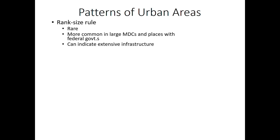Similarly to what we learned about Borchert's model, when you build infrastructure somewhere, that allows people to travel, which influences where people choose to live. Countries that are really developed will probably have really good infrastructure, especially if they're very large in land area and have a federal government. A federal government gives more incentive to build infrastructure to get to different places, since power is not concentrated in one place.